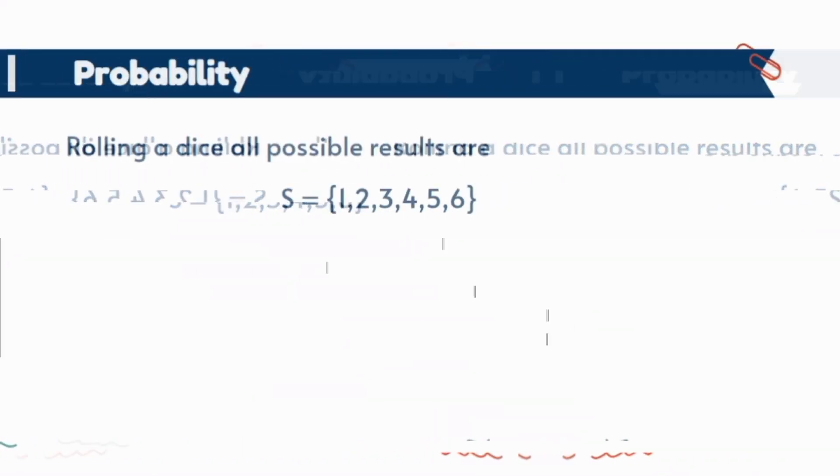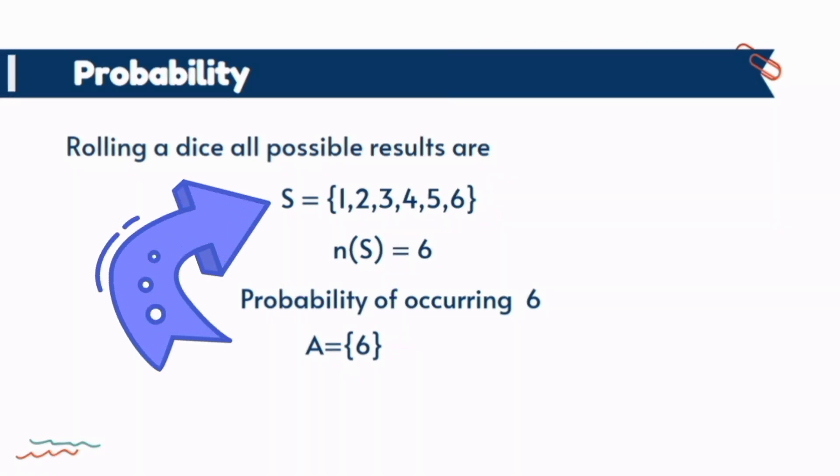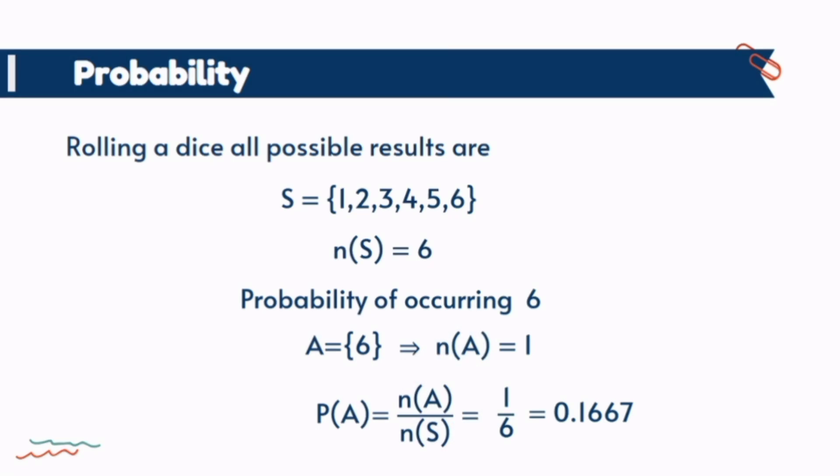It is better to write it numerically. It has six sample points and we want to check the probability that six will occur. Let this event is noted by A. Now take all possible sample points that match your desire and there we found six appears only one time, so that the number of sample points in this event is only one. Now we can calculate the probability by putting the values in the formula. The results shows that probability of occurring six is about 17 percent when we roll a dice.